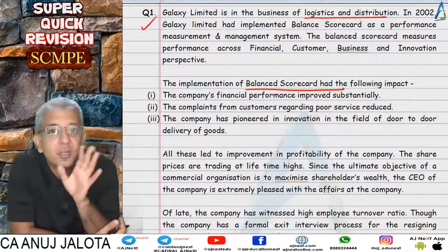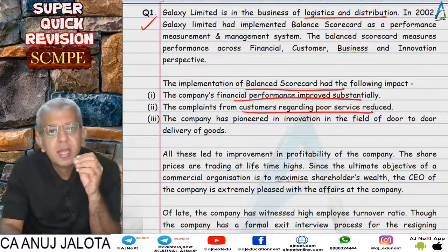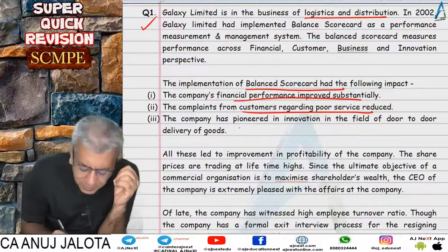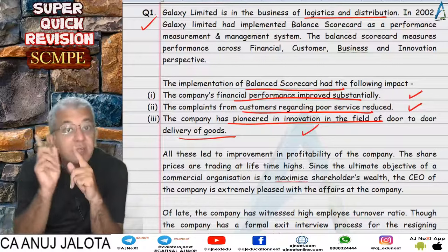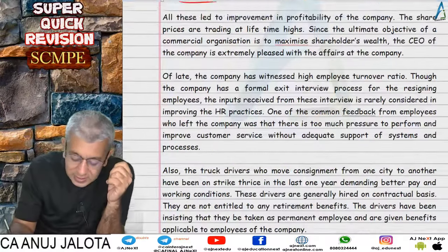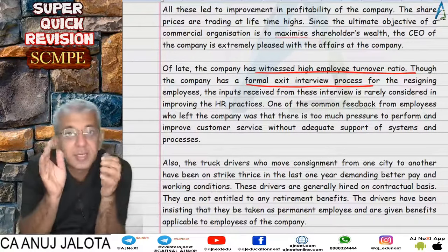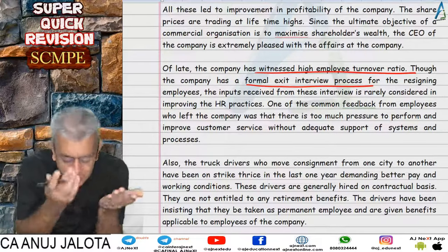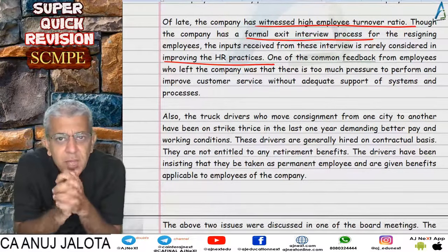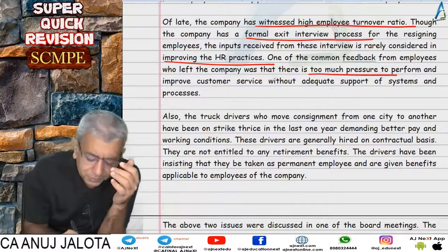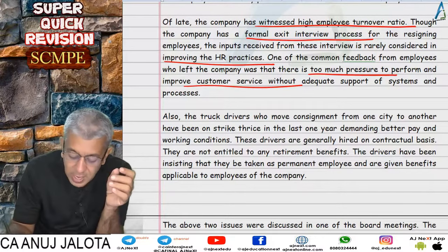Through the Balanced Scorecard, the company's financial performance had improved, complaints from customers had fallen, and innovation had been achieved — so the financial, customer, and learning and growth perspectives were performing well. However, the company started to witness high employee turnover. They had a formal exit interview system but rarely considered the feedback. A common feedback was that there was too much pressure to perform and improve customer service without support of systems and processes.